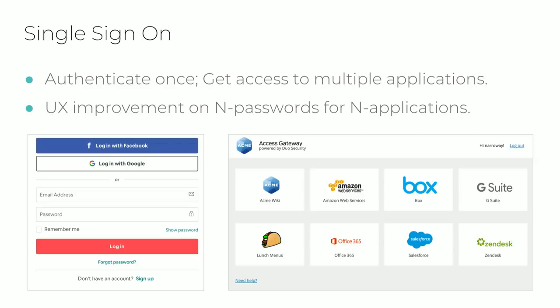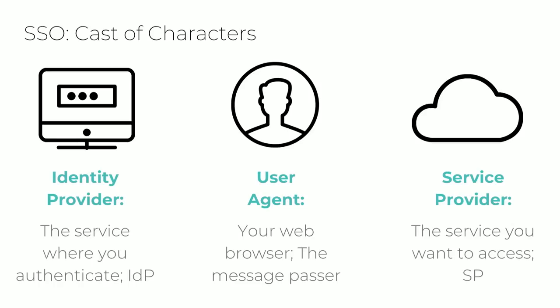SSO describes a user experience where you authenticate to one service in order to access multiple services. Users benefit because they only need to remember one really good password to access multiple web applications. In a generalized SSO setup, there are three main characters: the identity provider, often abbreviated IDP, which is who you authenticate to; the user agent, which is essentially a web browser acting on the user's behalf; and the service provider, abbreviated SP, which is the service the user wants to access, like a payroll app or chat service.